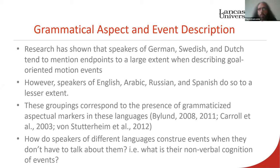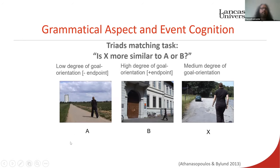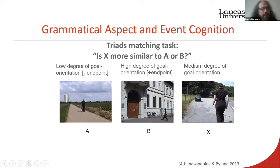The main neo-Whorfian question is: what happens when you must construe events without talking about them explicitly — what is your non-verbal cognition? This is where the triad matching task serves as a window into non-verbal construal. We have a minus-endpoint video where an agent walks with a possible endpoint very far away; the video stops before the agent reaches it.